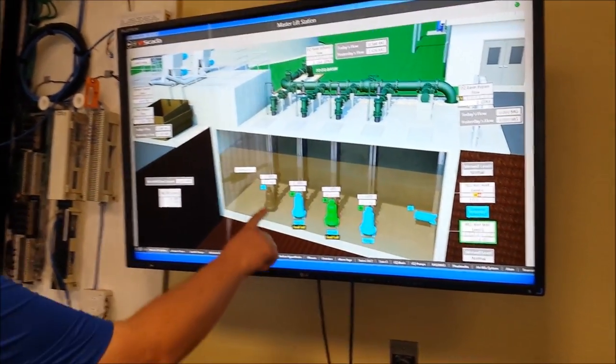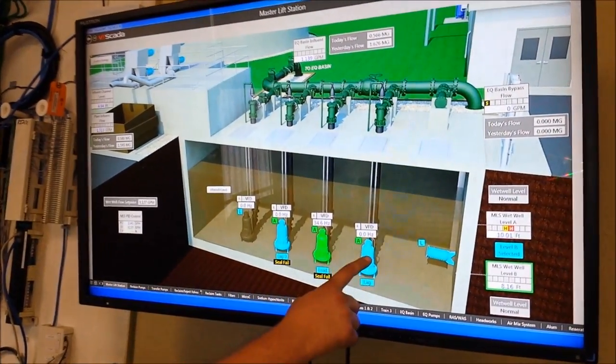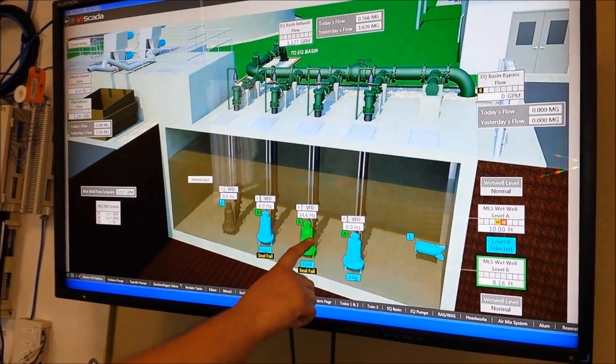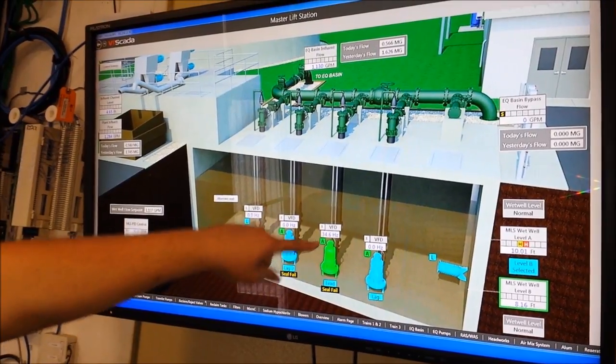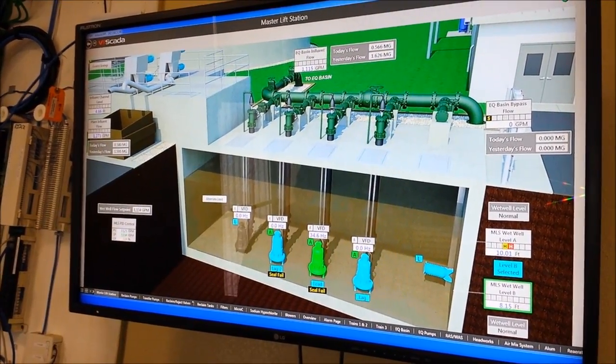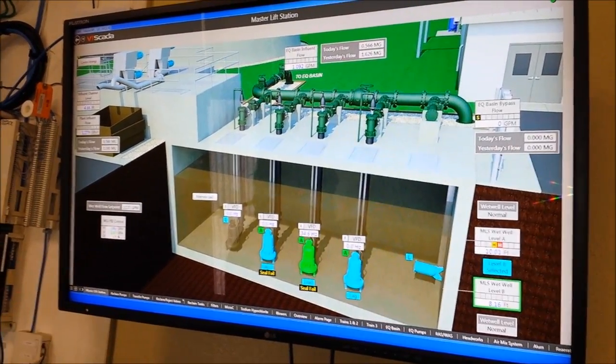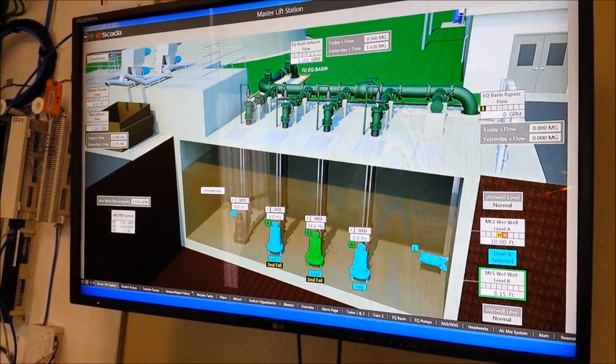And then these pumps that you see here—blue is off, green is on—is what distributes it throughout the plant and determines whether it goes to trains one, two, or three, being the treatment trains.